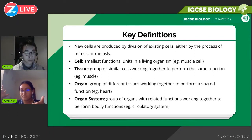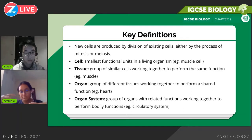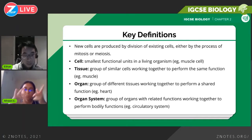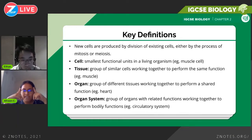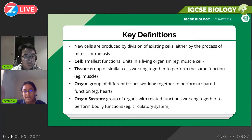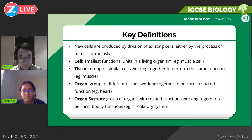Tissues are groups of similar cells working together to perform the same function — for example, your muscles. Organs are a group of tissues working together to perform a shared function — for example, your heart. Organ systems are a group of organs with related functions working together to perform a body function. When you notice the pattern across these definitions, it becomes easy to learn. These usually come up for one or two straightforward marks — define or fill in the blanks.